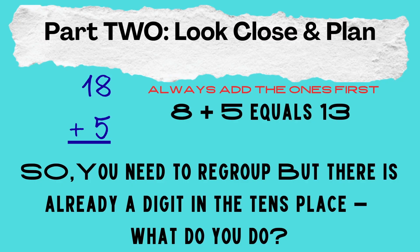Look at the problem: eighteen plus five. I know that I always have to add the digits in the ones place first, and eight plus five gives me thirteen. Well, I can't put thirteen in the ones place. So I have to bundle ten ones to make a bundle of ten and move that bundle over to the tens place — but there's already a number one there. So what do I do? Let me show you.